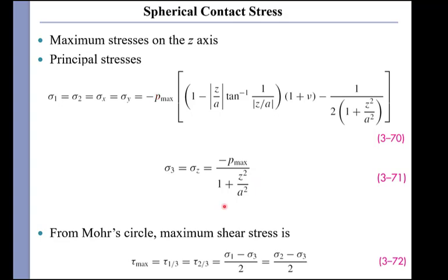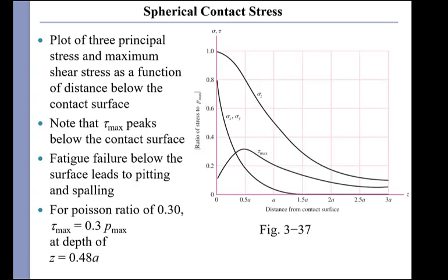Where do we get plastic deformation in the contact patch? From Mohr's circle, the maximum shear stress is going to be given by differences in principal stresses. And so we can plot those as a function of distance from the contact surface in the z direction. So we're going from the contact into the body of interest. We plot sigma 1 and sigma 2. That's sigma x and sigma y. They are the same. You can see that they have an exponential decay to zero as we move away from the contact patch.